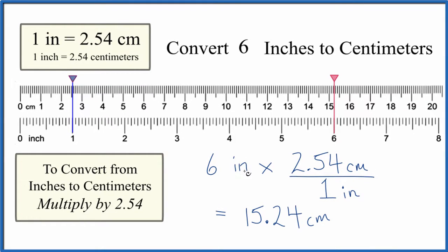So six inches times 2.54, and that's centimeters per inch. Inches cancel out, we're left with centimeters. Six inches, that equals 15.24 centimeters. Pretty close to what we found before.